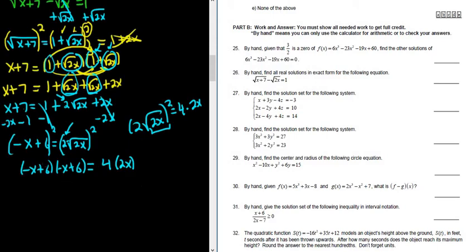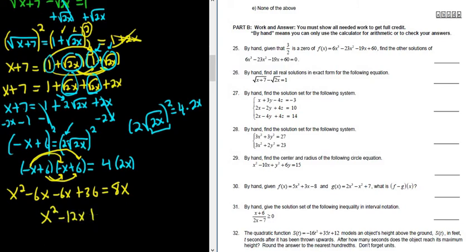Let's distribute. So negative x times x is x squared. And then this one times this one is going to give us negative 6x. The inside also gives us negative 6x. And the last is going to give us 36. And this here, 4 times 2x, that's 8x. Combined like terms. So x squared minus 12x plus 36, and that's equal to 8x.